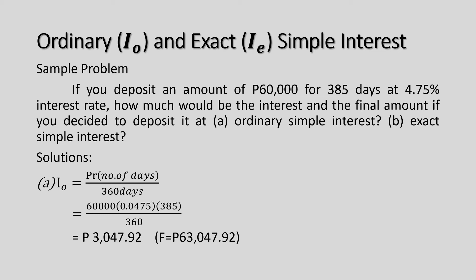To solve for the final amount, we simply add the ordinary simple interest to the principal amount. So P60,000 plus P3,047.92 gives us a final amount of P63,047.92.